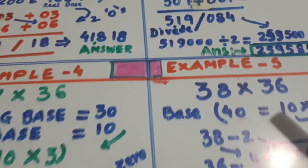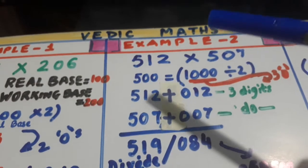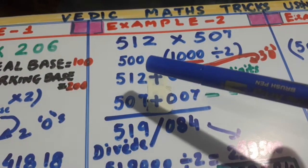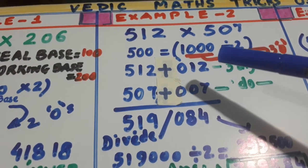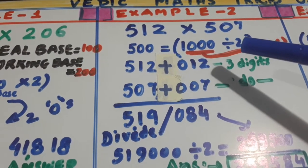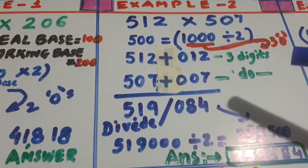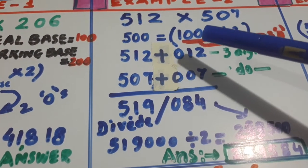512 into 507. Here the working base is 500, which can be written as 1000 divided by 2. Now look here. It is 3 digits nowhere. 1, 2, 3.